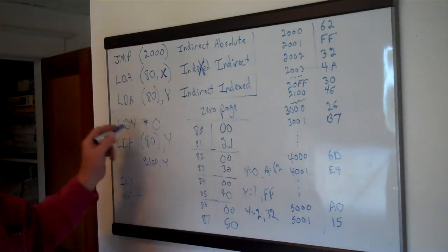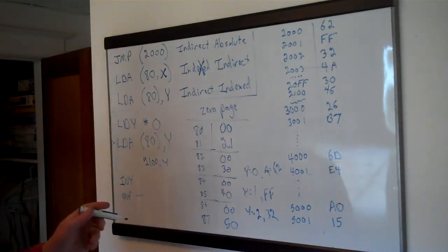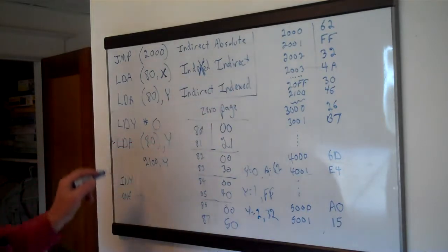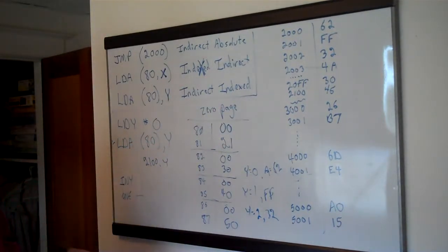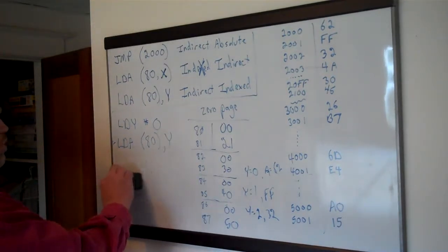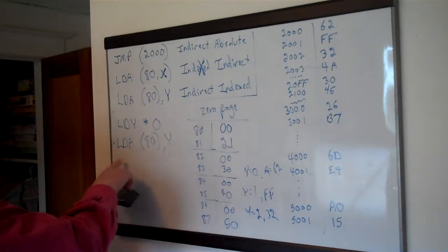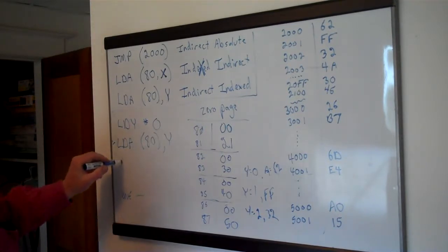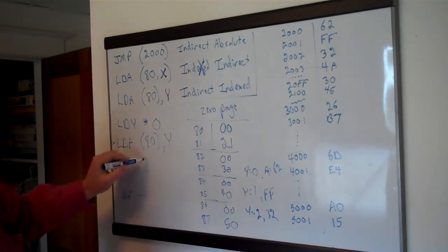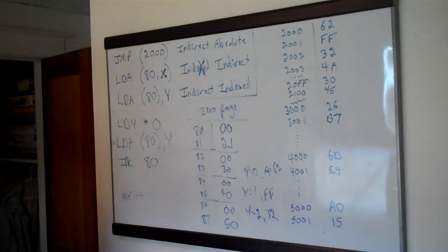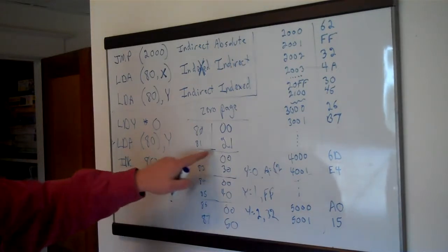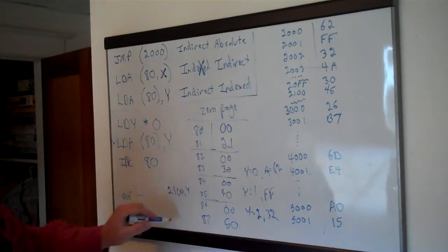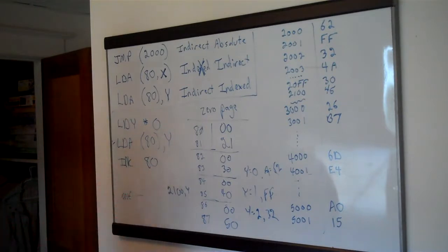By adjusting the pointer, you can change which block of memory you're working on and still index within it. Also, if you leave Y at zero — which is how the worm program does it — you can just have one pointer moving around through memory. For example: load A from (80),Y, then increment 80, then branch if not equal. This loads from 2100,Y (which is just 2100 since Y is zero), then increments the pointer, and the next time around loads from 2101.